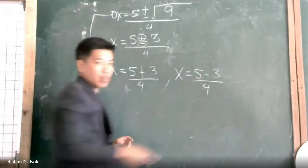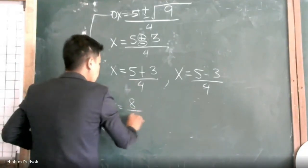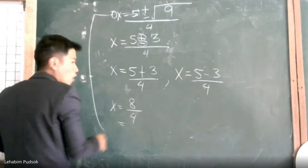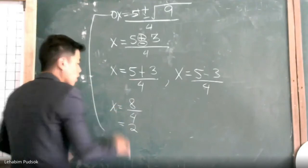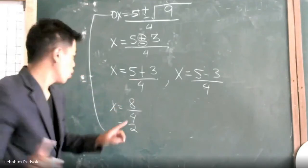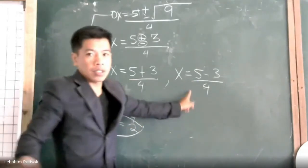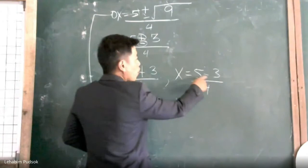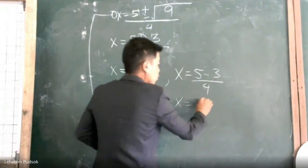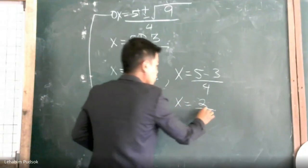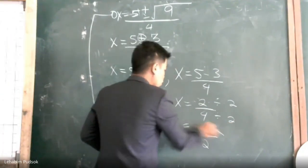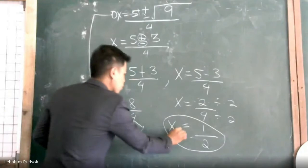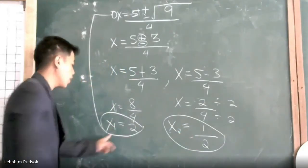Five plus three is eight, all over four. Eight divided by four equals two. So x₁ = 2. For the second value: five minus three is two, all over four. Two divided by four equals one-half. So x₂ = 1/2. Thank you very much for watching and listening. Please don't forget to subscribe.